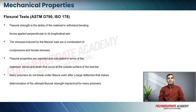Flexural strength, which is denoted by ASTM D790 and ISO 178, is the ability of a material to withstand bending or flexural forces when the forces are applied perpendicular to the longitudinal axis. The stresses induced by the flexural load are a combination of both compressive and tensile strength.